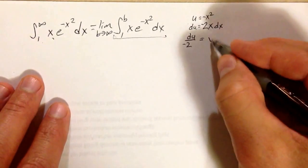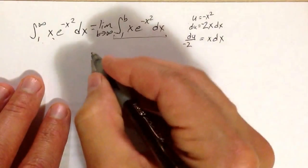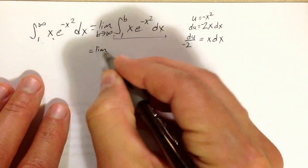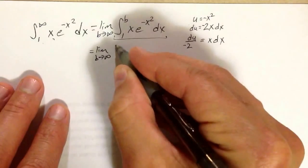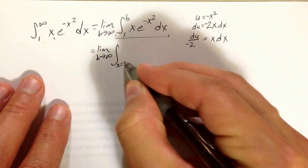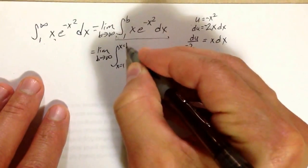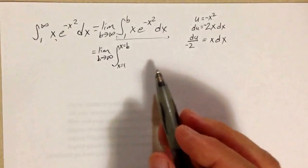So I've got the limit as b goes to infinity of the integral from x equals 1 to x equals b of, let's see,